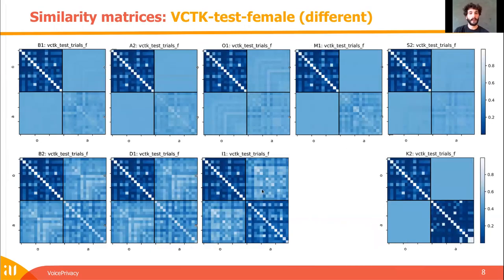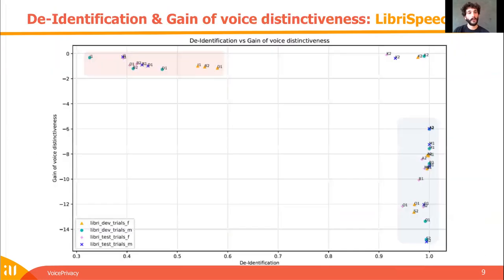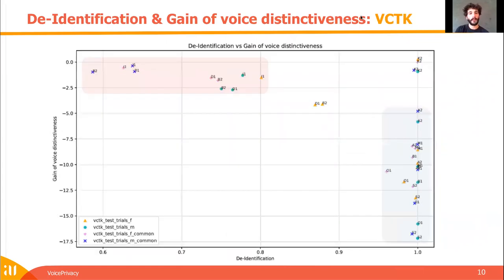Here are the results for another set, the TK test female set. We can see that performance differs across sets, and also across speakers — the background of the diagonal is not homogeneous. So some speakers can be left with poor protection even if the systems perform well globally. Looking at de-identification and gain of voice distinctiveness for LibriSpeech and PCTK, most systems performed well either on de-identification or on voice distinctiveness preservation, but K2 performed well on both.